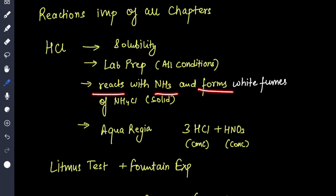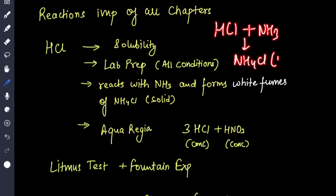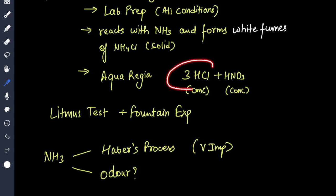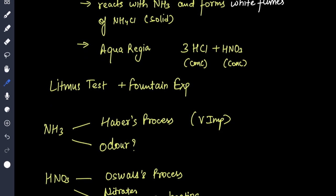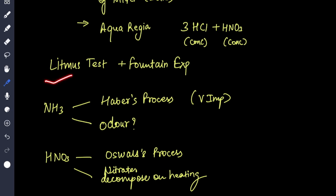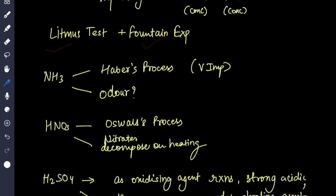Reacts with NH3 and forms white fumes of ammonium chloride. Whenever HCl reacts with NH3, NH4Cl is formed which is white solid. Then aqua regia that has 3HCl + HNO3, this can dissolve gold also. Both are concentrated, make sure to write concentrated. Litmus test, fountain experiments, then Haber's process.